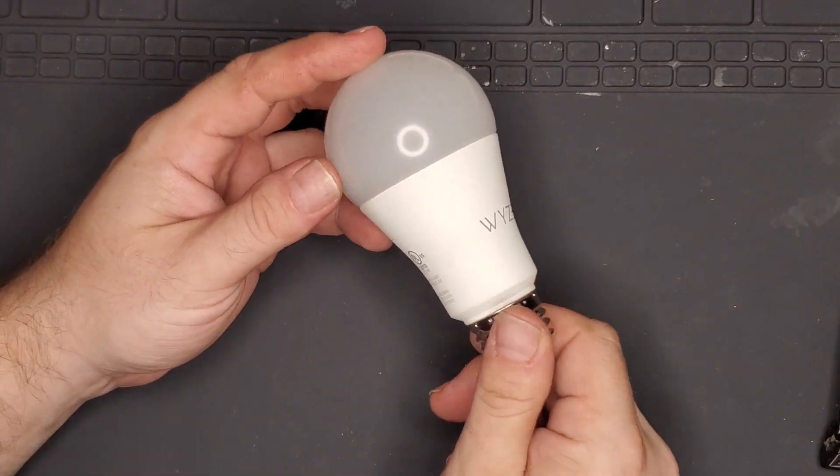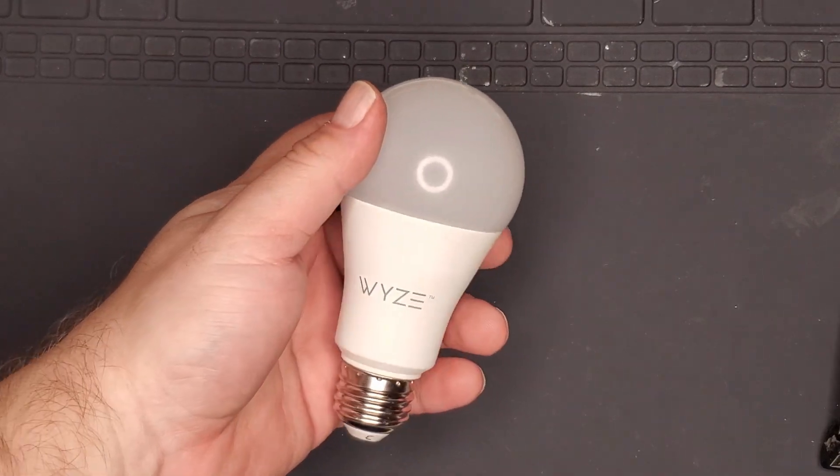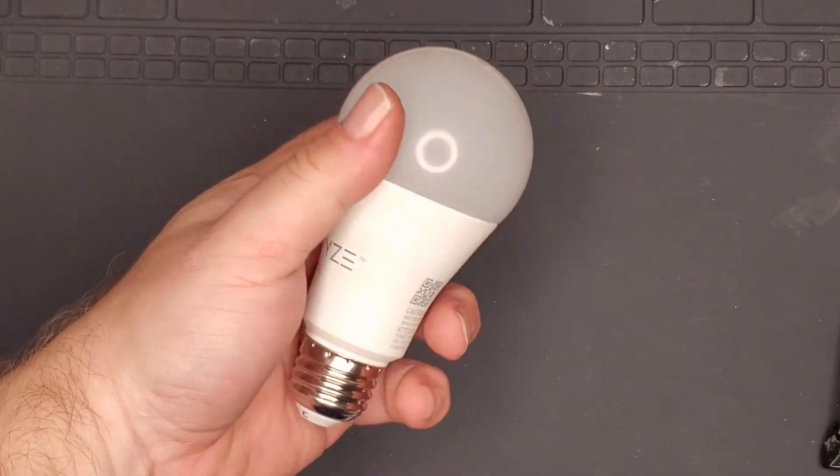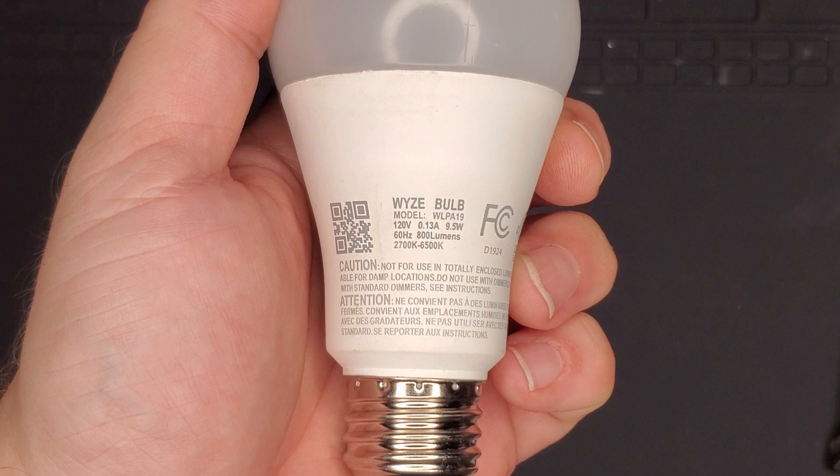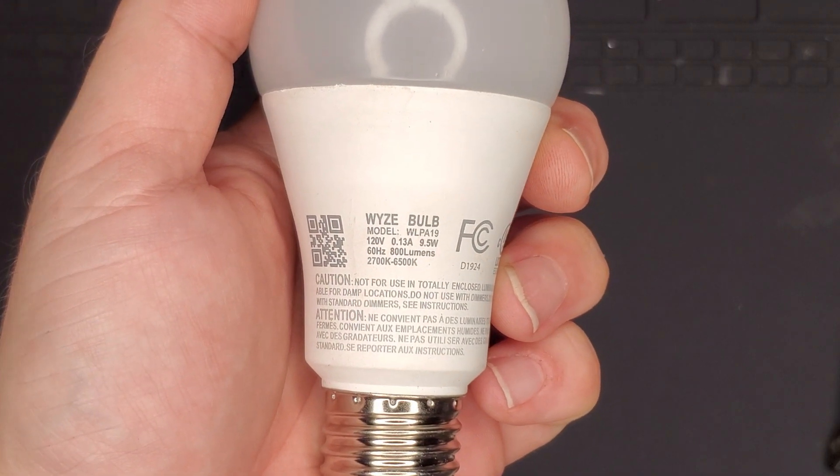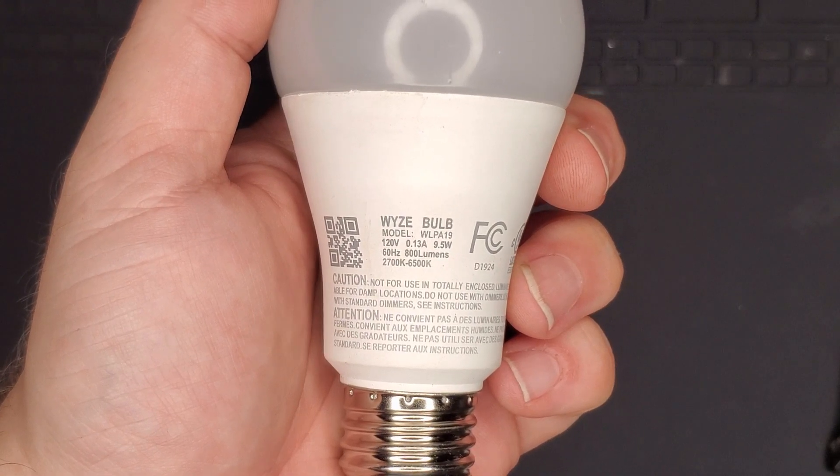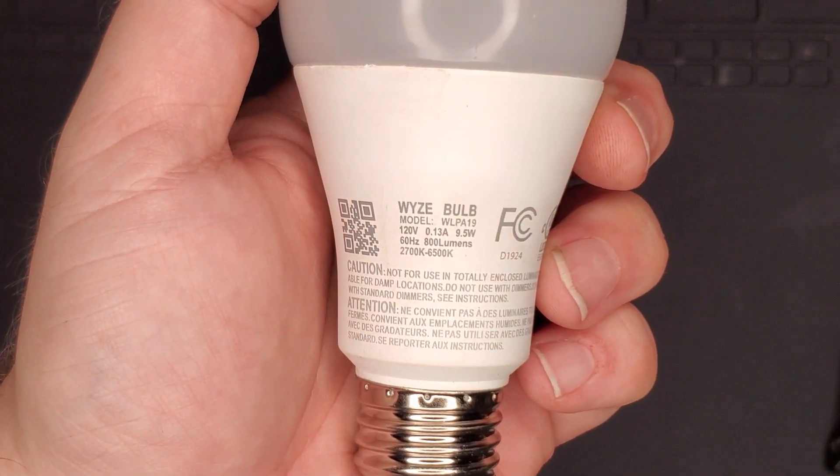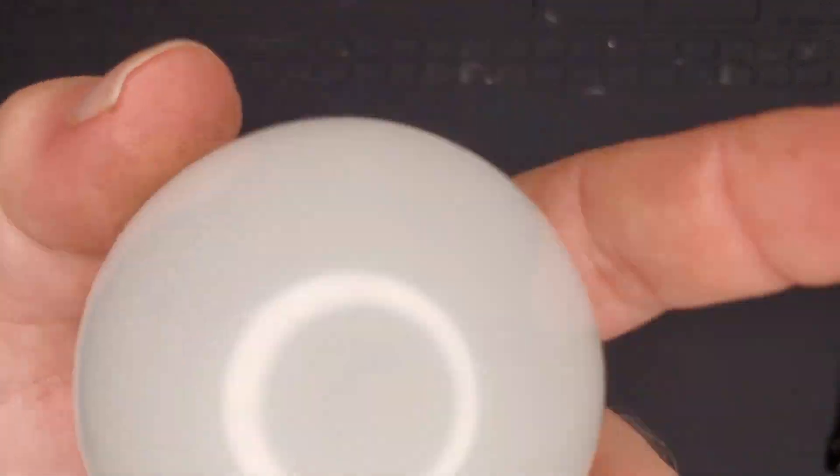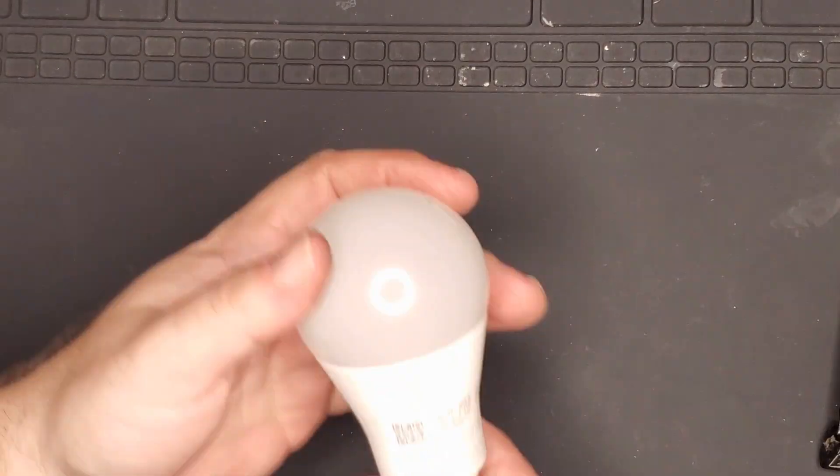They look a lot like just like a normal LED bulb. They don't look like anything special. They do have the Wyze logo. And there's some specs on the back. 800 lumen, like 9.5 watts. So, oh, here we are. Yeah, 2700 to 4500 Kelvin. So yeah, it's very similar to my video light here.